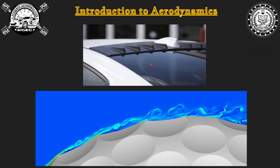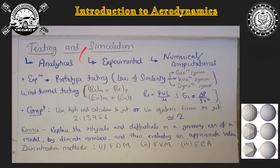Now we've seen all the aerodynamic techniques. Let's talk briefly about testing and simulation. After designing, you have to test and validate your design. There are three major testing methods: the first is the analytical approach, which uses theory and formula-based methods like the Bernoulli equation — but in real-life examples, formulas are often not sufficient, so this is not used much.